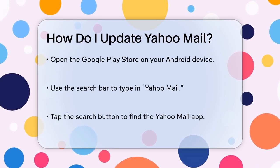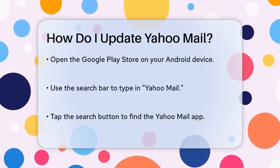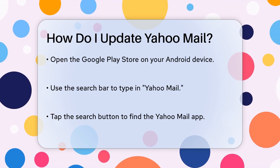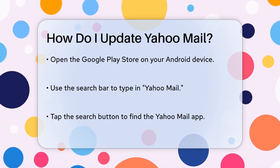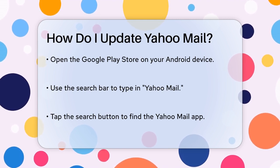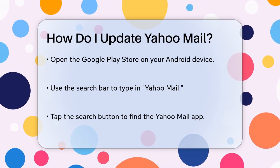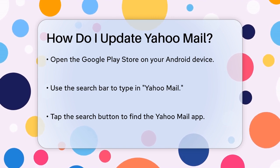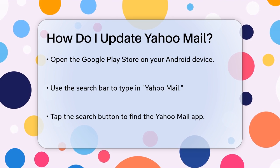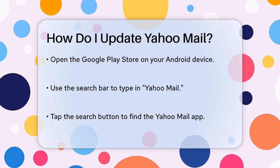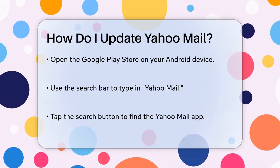First, you need to open the Google Play Store on your Android device. Once it's open, tap on the search bar at the top and type in Yahoo Mail. Hit the search button, and the Yahoo Mail app should pop up in the results. If there's an update available, you'll see an Update button instead of Open.